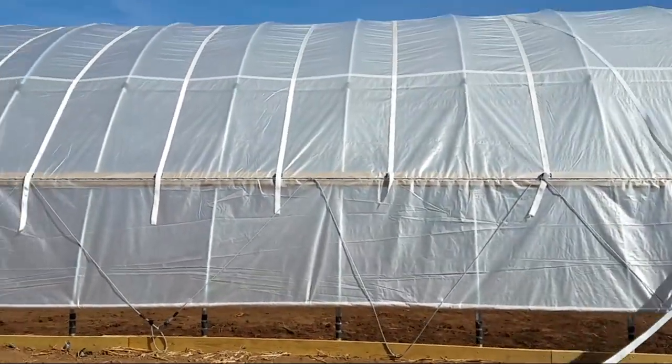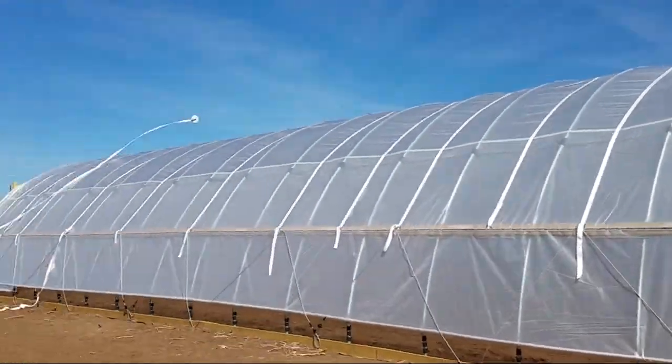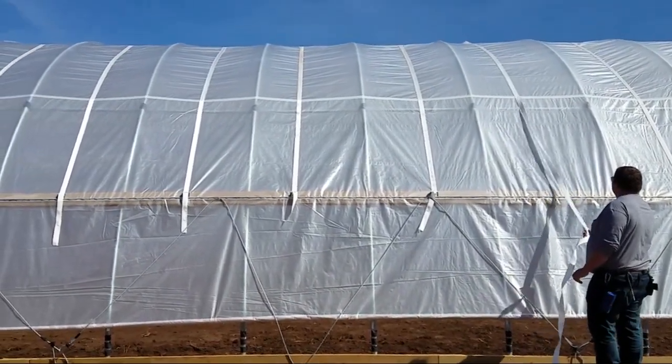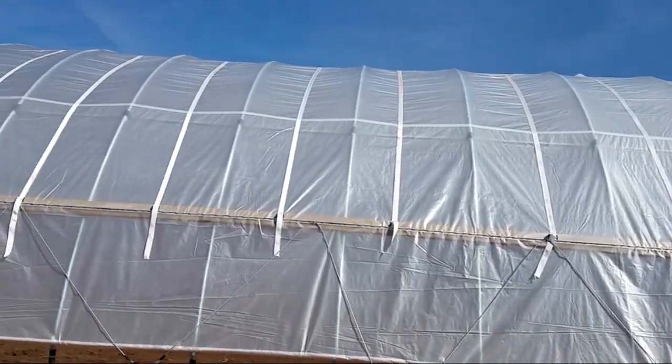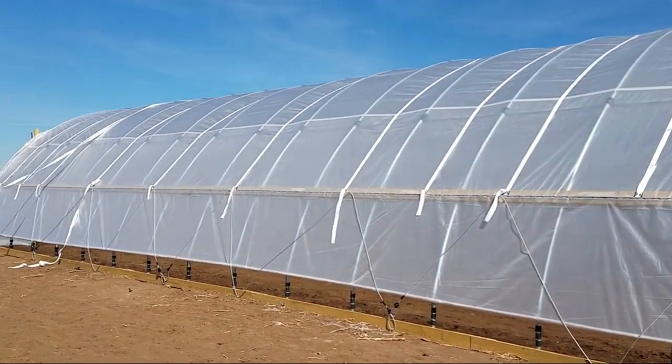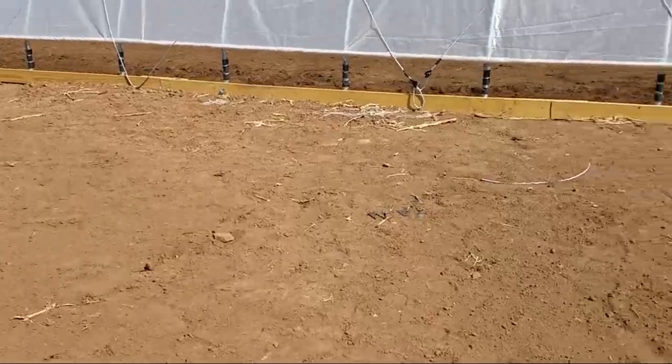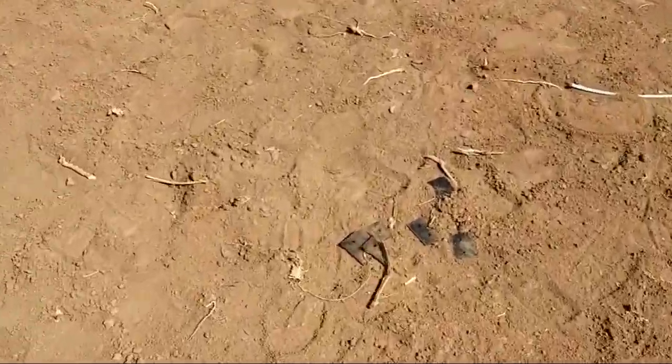What we're doing is one person on one side will throw the roll over, then the guy on the other side will pull it tight. We'll pull all the wrinkles out of it, the twists, and we'll show you these little brackets that we made.